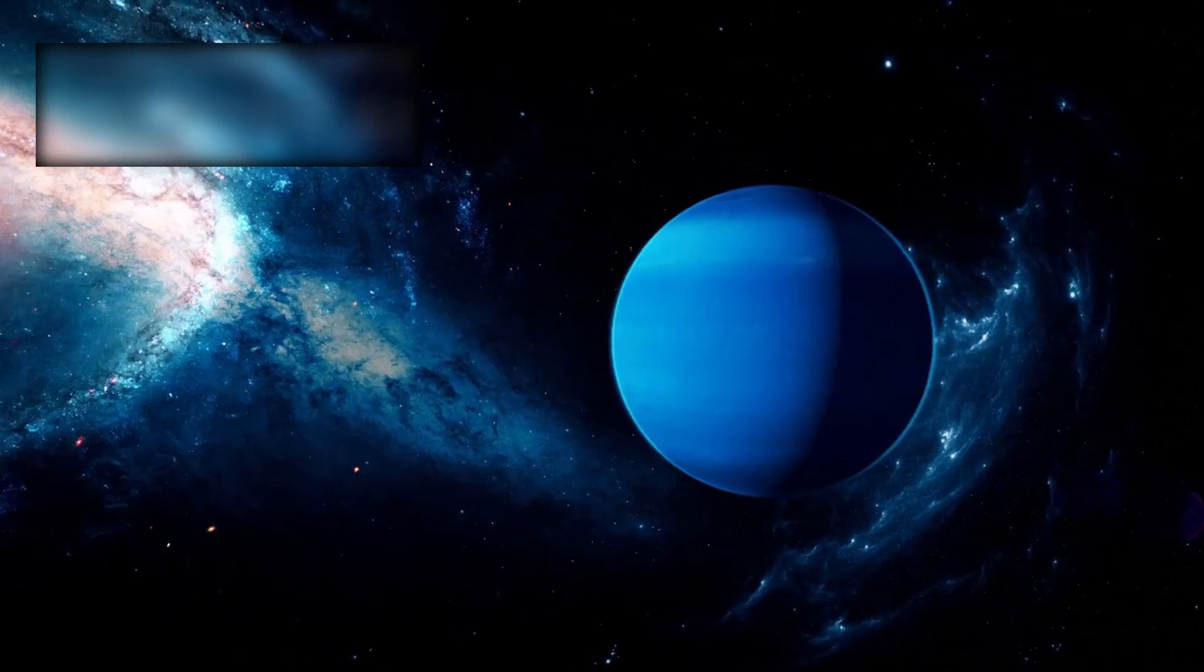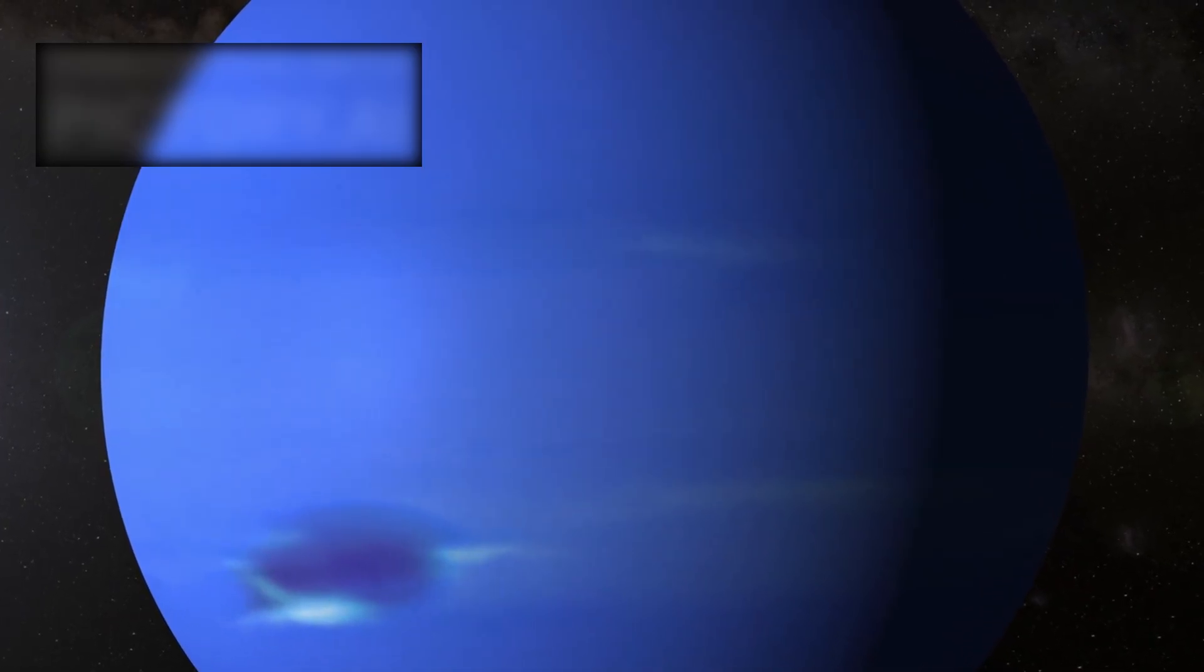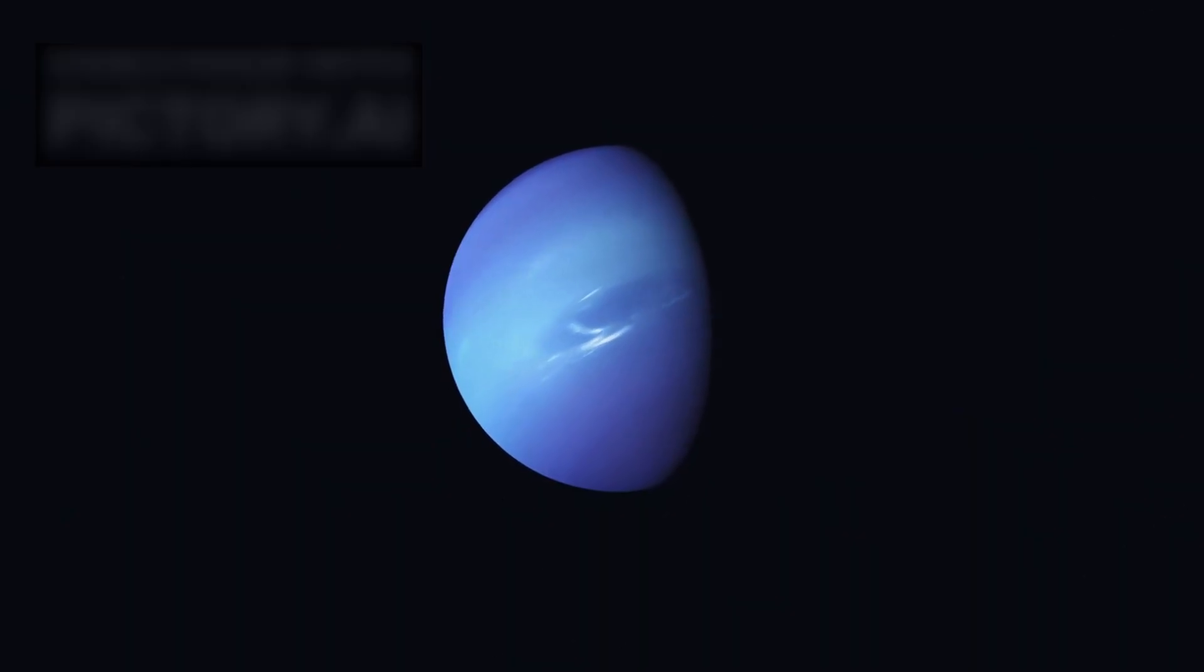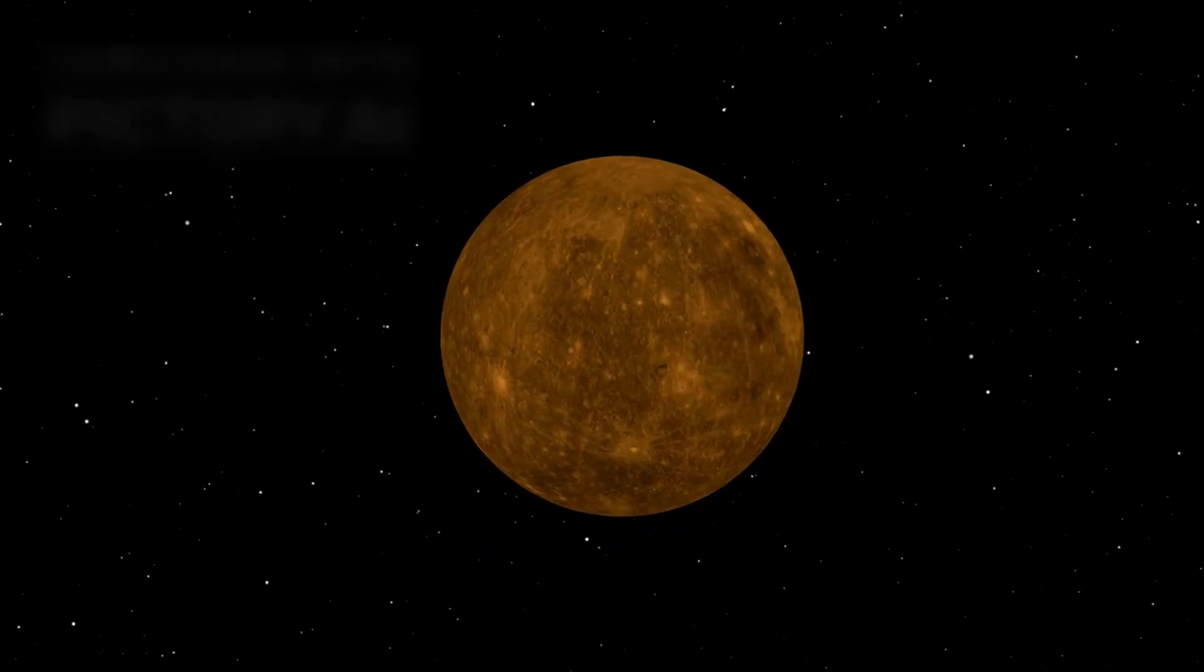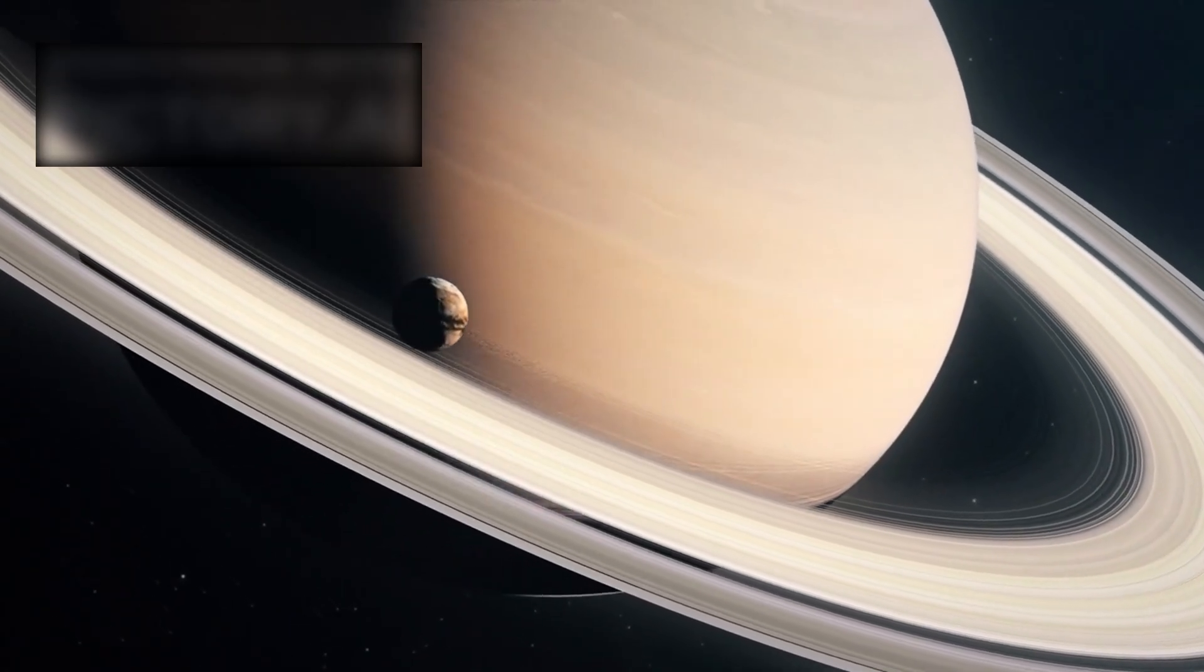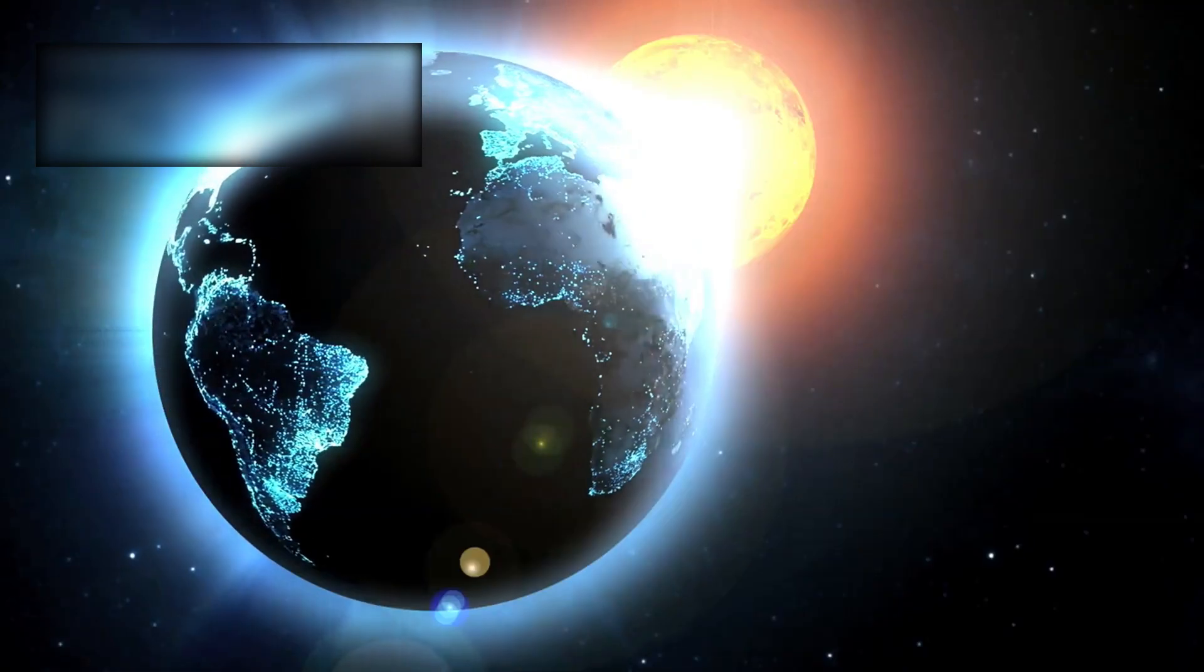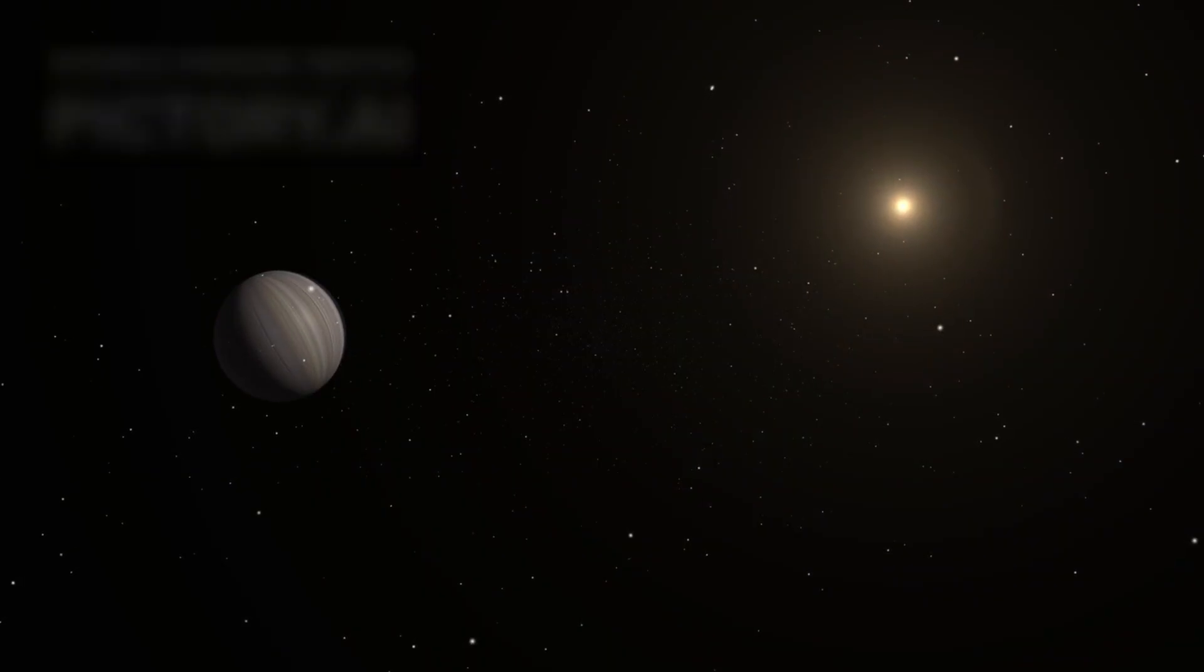K-218b belongs to a rare and fascinating class of planets, the sub-Neptunes. Worlds larger than Earth yet smaller than Neptune. Massive enough to hold swirling atmospheres, but not so immense as to transform into overwhelming gas giants. What makes them remarkable is this: none exist in our own solar system. We know the rocky worlds - Earth, Mars, and Venus. We know the titans of gas and ice - Jupiter, Saturn, Neptune. But sub-Neptunes belong only to other stars, making them cosmic puzzles, hybrid worlds that are at once familiar and alien.